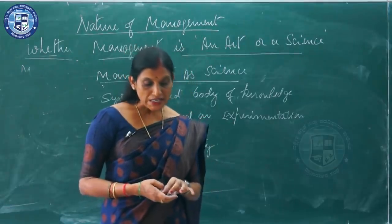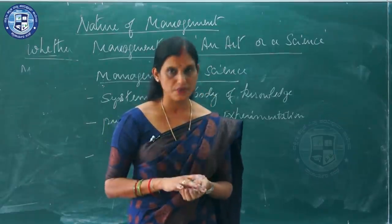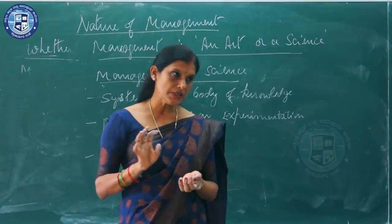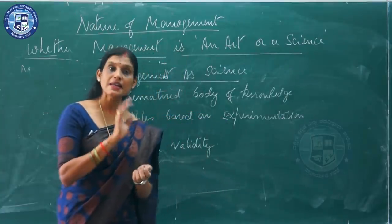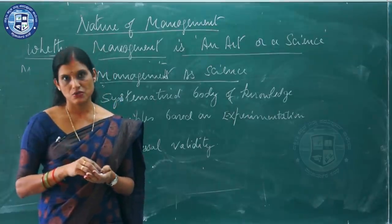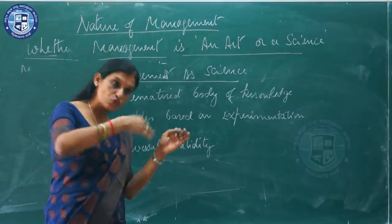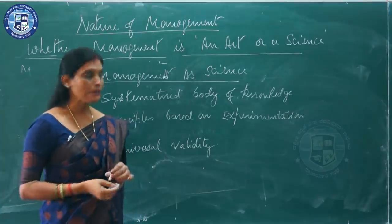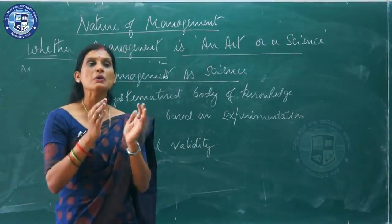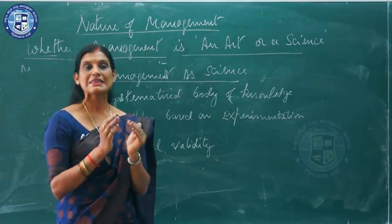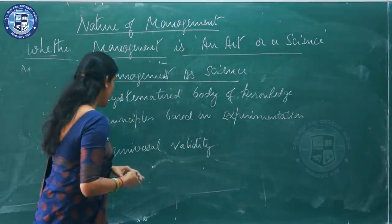Next, management principles are based on experimentation. Scientific principles are first observed and then adopted — they are not advocated overnight. In the same manner, the scientific principles of management have been studied over a period of time and then given as principles. You experiment first, you observe, you analyze the situation, and then only you adopt it as a principle of management.